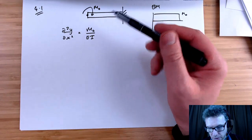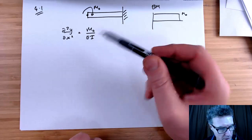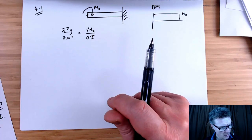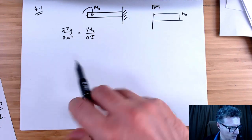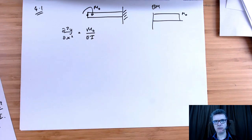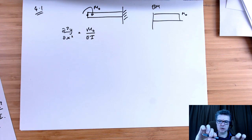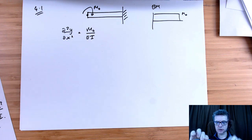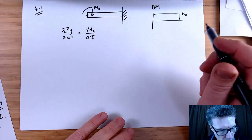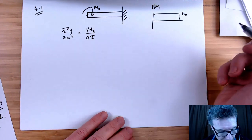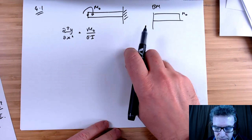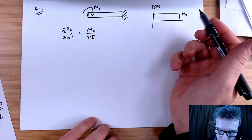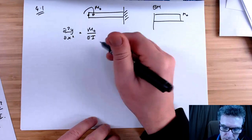Thinking about twisting it — is it going to make it go down or go up? If I'm at the end of the beam and I do that twist, I'm going to go up. So use your brain. Now, how do I integrate a constant? A constant integrated with respect to x gives a constant times x, plus another constant.